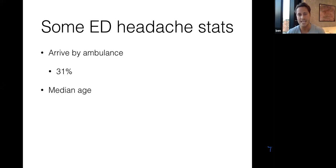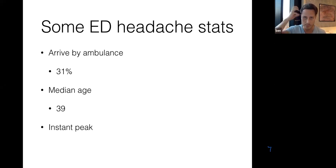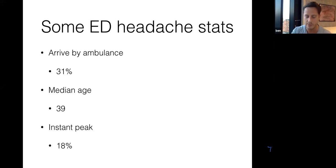The median age of someone coming to A&E with a headache is quite young, about 39. People who come to A&E with a headache with an instant peak — this is your thunderclap headache — account for about 18%. Thunderclap headaches, sudden onset headaches, can cause a lot of anxiety in internal medicine. So I'm going to be focusing on that at the beginning of this talk.